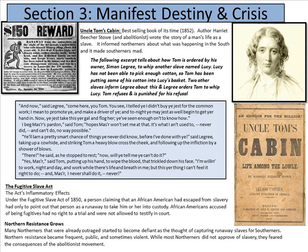The Fugitive Slave Act came out at this time. Under the Fugitive Slave Act of 1850, a person claiming that an African American had escaped from slavery had only to point out that person as a runaway slave and take them into custody. African Americans accused of being fugitives had no right to trial and were not allowed to testify in court. Many Northerners already outraged started to become defiant about capturing runaway slaves for Southerners. Northern resistance became frequent, public, and sometimes violent, though most Northerners did fear the consequences of the abolitionist movement.